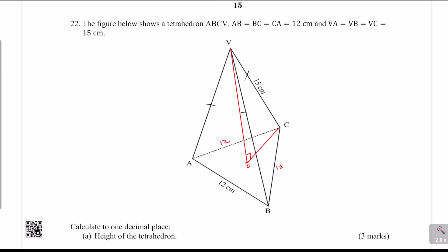We know VC, but we need CO. Using triangle ABC, we can extend the line C to a point N. However, the distance from C to O is not equal to O to N — O is not the midpoint of CN. So when we get CN and divide by 2, that would be wrong. We need another concept to get CO.